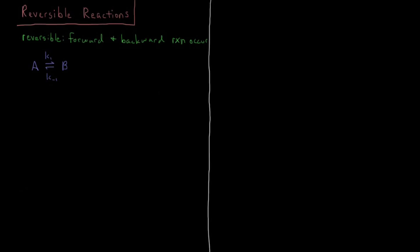In this video we're going to discuss the kinetics for reactions that can occur in either the forward or backward direction. A reversible reaction can go both forward and backward. If we have some reactant A and some product B, that is indicated by the double arrow, which is generally used for equilibrium-type reactions. It has some rate constant in the forward direction K1, and some rate constant in the reverse direction K-1.